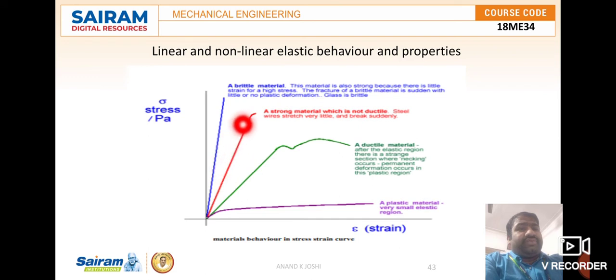If you take ductile material as an example, there is a non-linear stress-strain curve. The elastic region will be there, the yield point will be there, and the plastic region will be there—all of this represents non-linear properties.